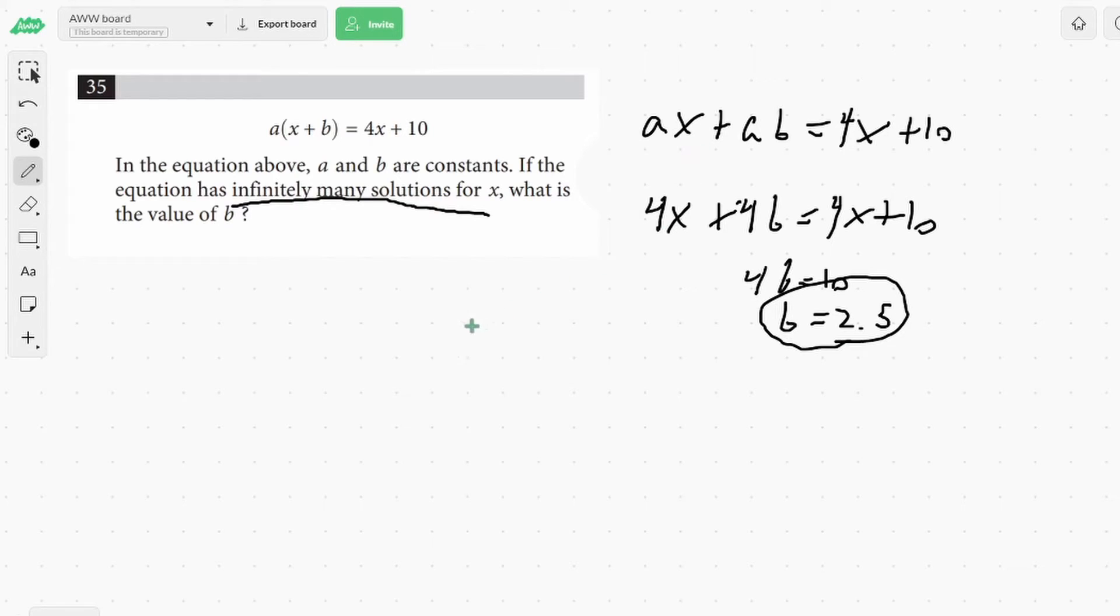So let's look at that. If we plug those in, we would get 4x plus 2.5 times 4 is just 10 equals 4x plus 10. So with this and with equations that have infinite solutions, you have the same thing on both sides. That's because you would cancel the x's, and we're left with something that's always true, 10 equals 10. Now let's move on to another problem.